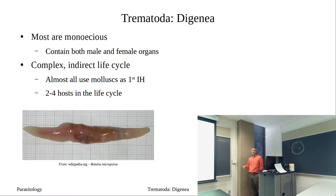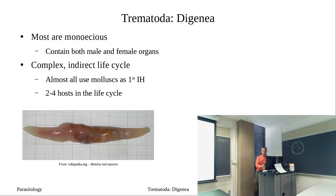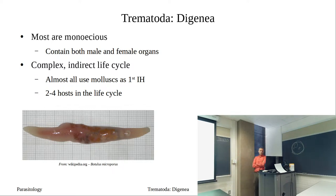Their life cycles are complex, indirect life cycles — they're going to be multi-host. Almost all of them utilize a mollusk as the first intermediate host, usually a snail, but sometimes a clam or mussel. Usually a gastropod, sometimes bivalves. I don't know of any that don't, but 'almost all' kind of catches us, because we've got a lot of worms that haven't been described. In our complex life cycle, we're going to have anywhere from two to four hosts.